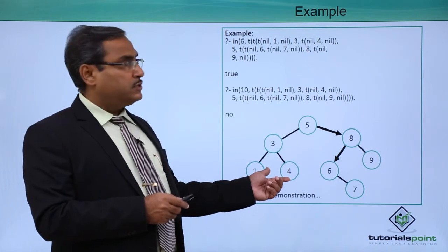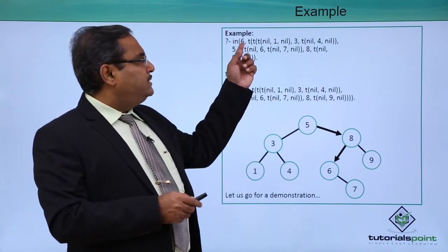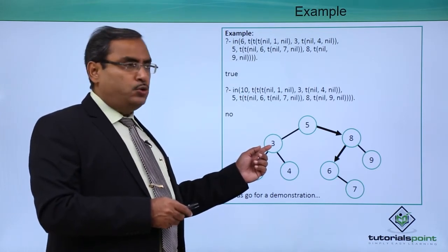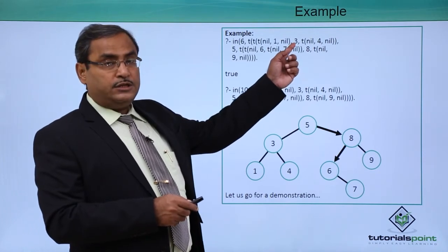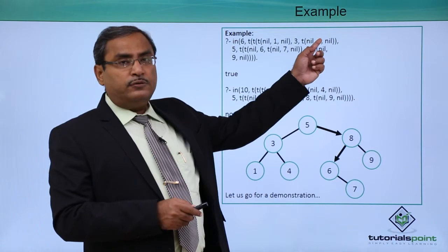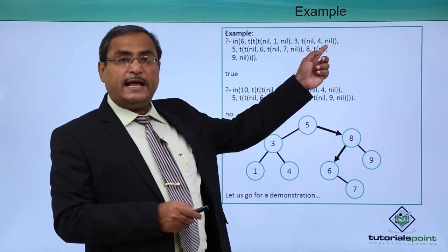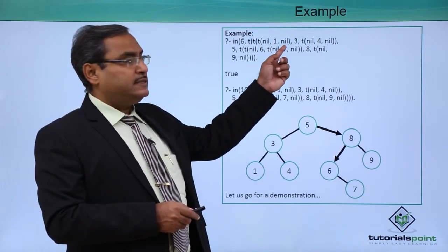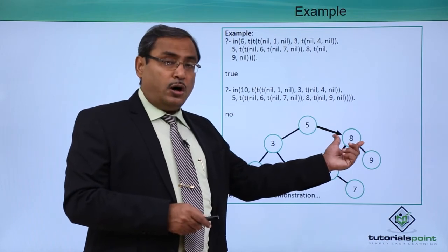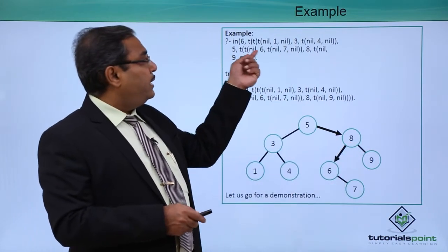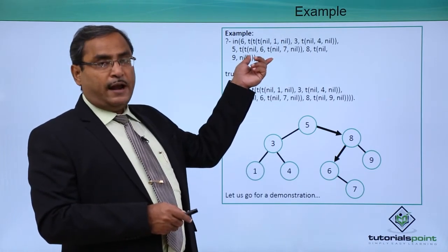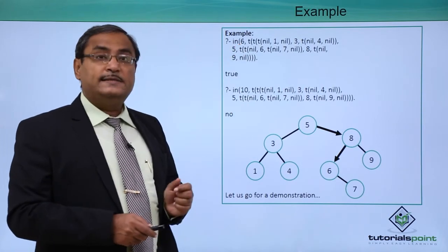In the 'in' procedure, we have passed this binary search tree as the second argument. Node 5 is the root, having a left subtree rooted at 3. Node 3 has 1 as left child and 4 as right child. Node 4 is a leaf node, so its left and right subtrees are nil. Node 1 is also a leaf node. Node 5's right subtree is rooted at 8, containing 6, 7, and 9. The first argument is 6, which will be searched.